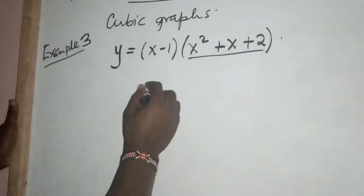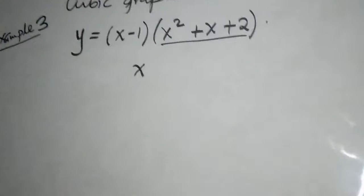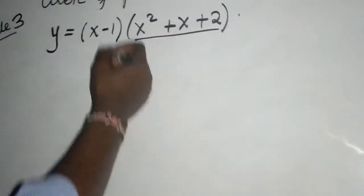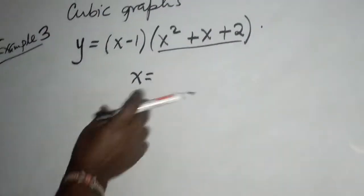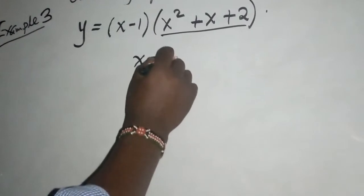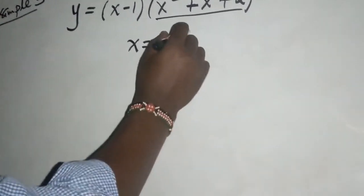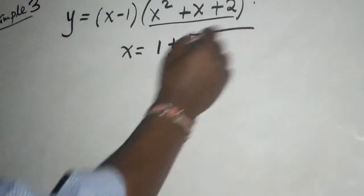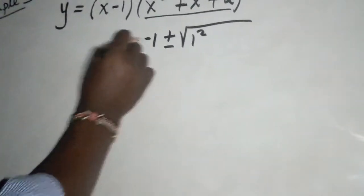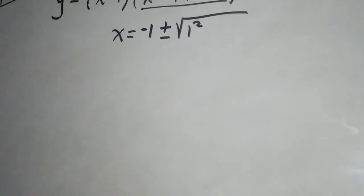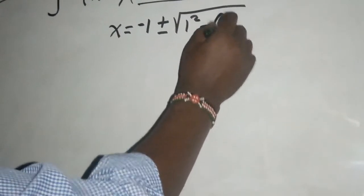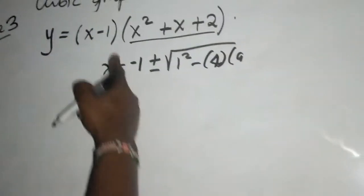We may talk about x equals, if you're dealing with the cubic part, x equals one plus or minus the root of one squared, because b is one. Of course this is negative b, minus 4a which is one, times c which is two.